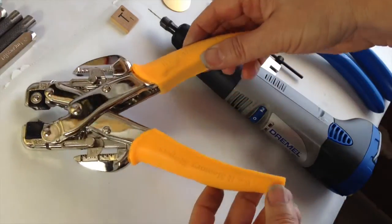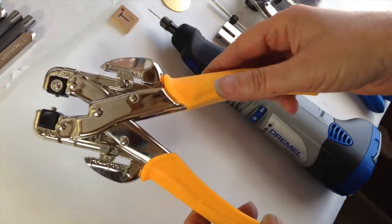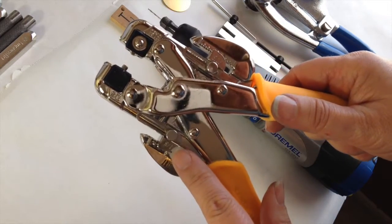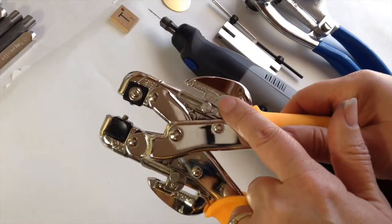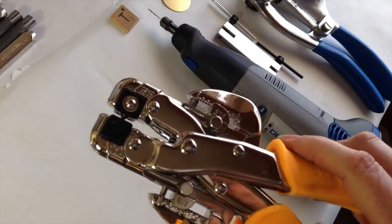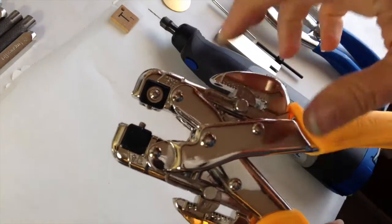This next one is my Crop-A-Dile and it will punch holes and it will set eyelets. So you can get a 1/8 inch or a 3/16th inch hole. It does a lot of paper and really thick paper, like thin cardboard, anything that you can fit in there.